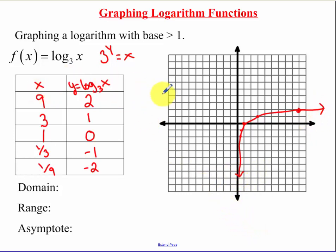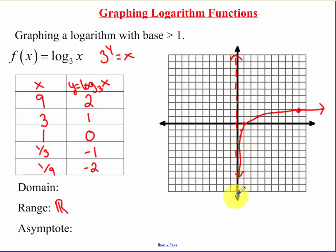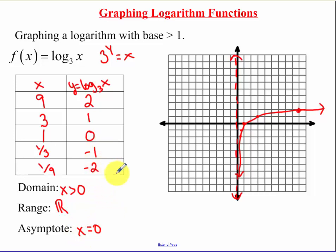Remember, logs and exponentials are inverses of each other. So whereas our domain for our exponential was all real numbers, our range now becomes all real numbers. We have an asymptote in here. For exponentials, the x-axis was our asymptote — now it's going to change to the y-axis. So it's going to be x is greater than 0 and our asymptote is x equals 0. That's what your logarithm looks like with your base greater than 1.